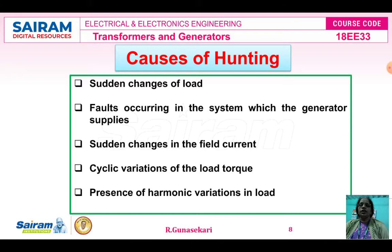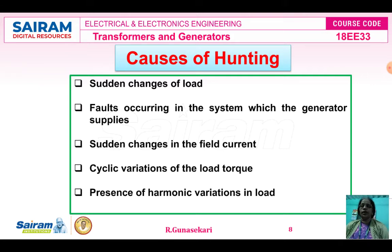Now we study the causes of hunting in synchronous generators. The first cause is the sudden changes of load — the load may be electrical or mechanical. If the load changes, the rotor gets oscillation, meaning the rotor goes to its new equilibrium position, which is nothing but hunting.